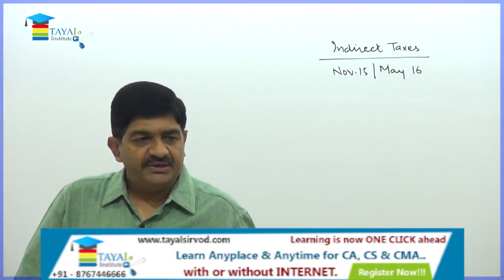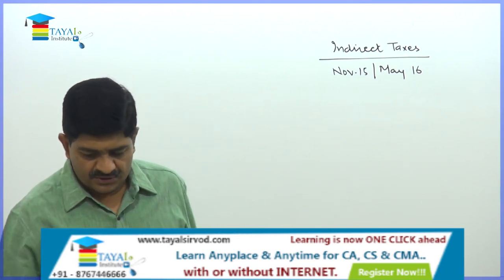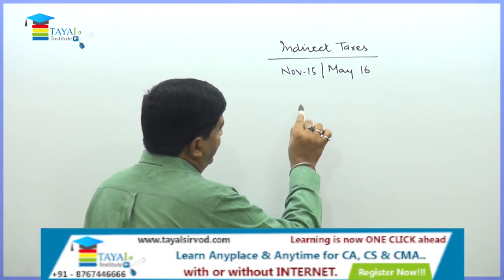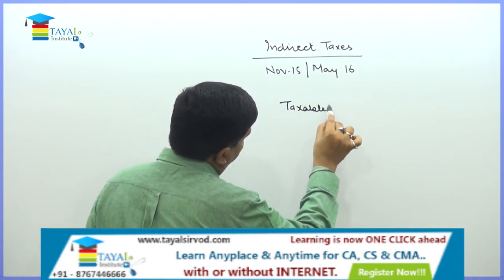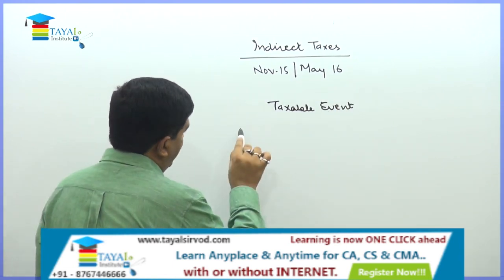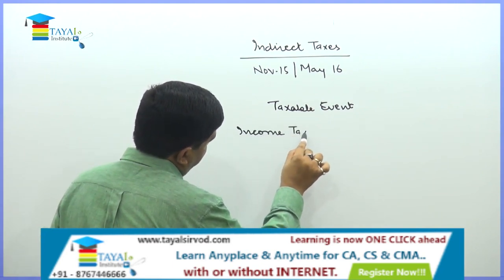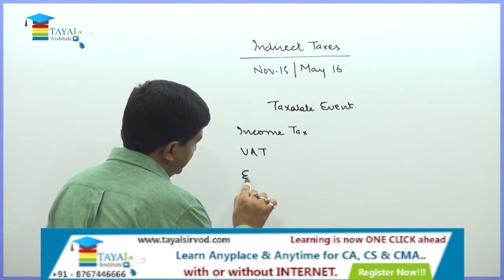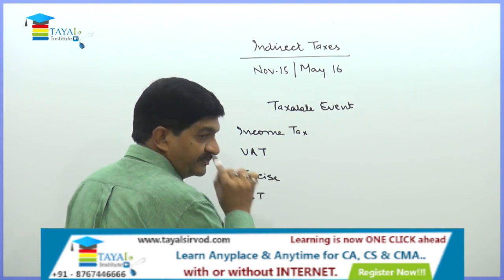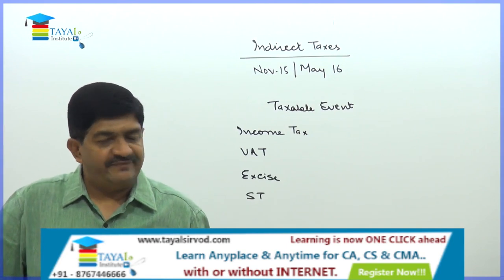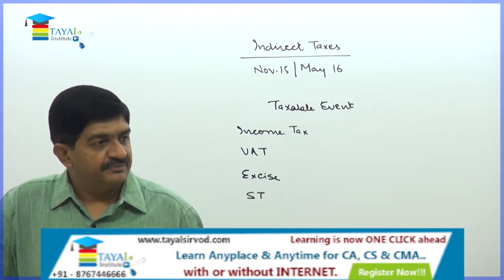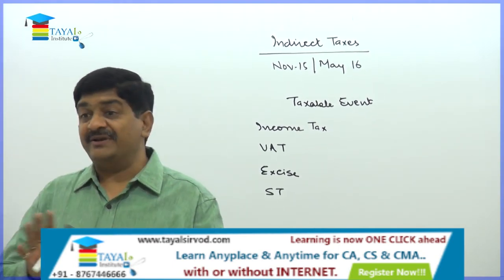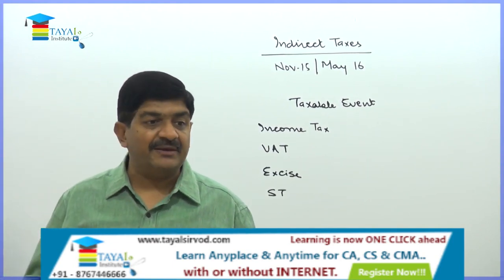What is Cenvat Credit? In IPCC, you have already studied about VAT. We have a taxable event for every kind of tax. You have studied about income tax, VAT, and basic introduction of indirect taxes — excise and service tax. For every tax, there is a taxable event. The tax liability accrues when the event happens. It need not be payable at the same time, but that is the point of time when liability accrues.